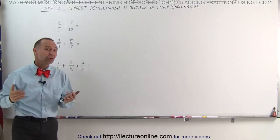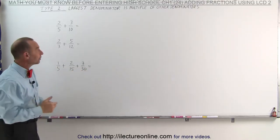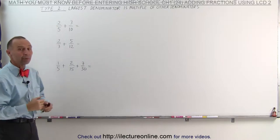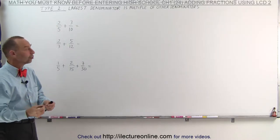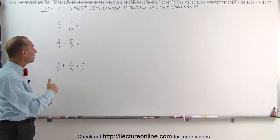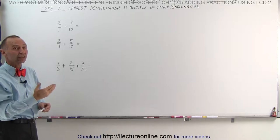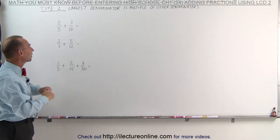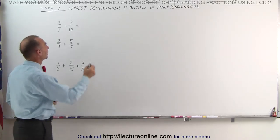The lowest common denominator in each of these cases simply becomes the largest denominator, which means we need to change the other fractions so that they will have the same lowest common denominator.